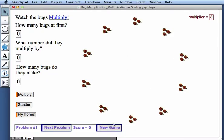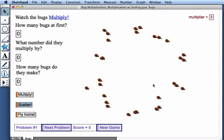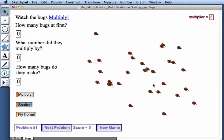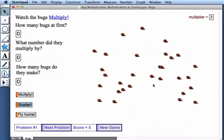And when we play the second game, we will see all the multiples of 3 from 1 times 3 up to 10 times 3. So this explains how to play bug multiplication. We'll see you soon.